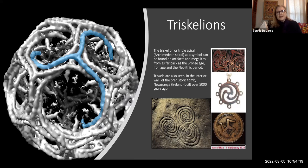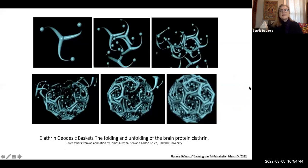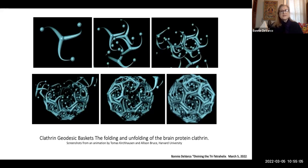The triple spiral, or the Archimedean spiral — three of them together as a symbol — you can find that in the Bronze Age, Iron Age, and Neolithic period. You can see it in artifacts and in burial megaliths, the interior of the prehistoric tomb Newgrange. This is a great folding and unfolding of the brain protein — it's an animation. I took screenshots of the animation by Thomas Kirchhausen and Alison Bruce at Harvard University. This beautiful little triskelion has that helical twist that comes together and folds into this beautiful basket structure that transports things around the body.